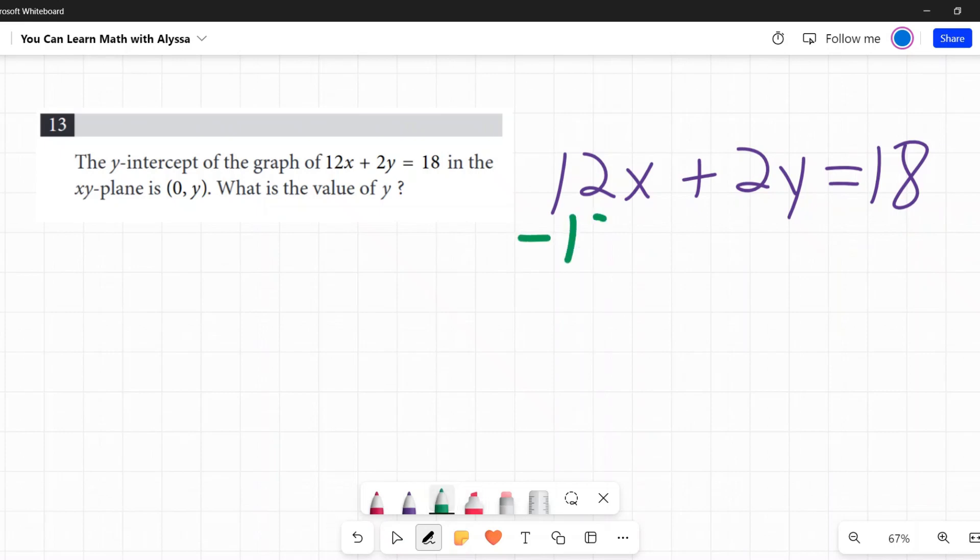So first I'm going to subtract 12x from both sides. So on the left side I am left with 2y, and on the right I have negative 12x plus 18.